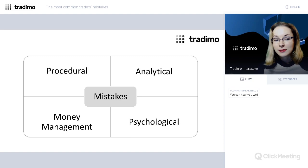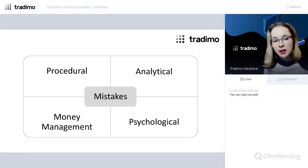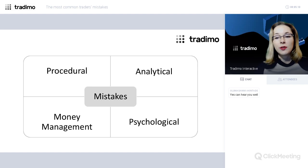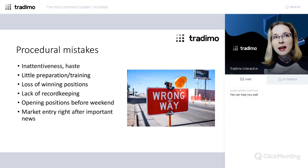We'll start with procedural mistakes. These are mistakes not mainly related to the other three groups, but to technical activities which are part of trading — related to the methodology of trading. The first is inattentiveness and haste.